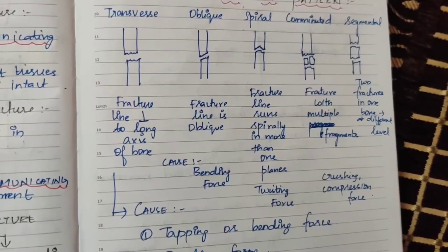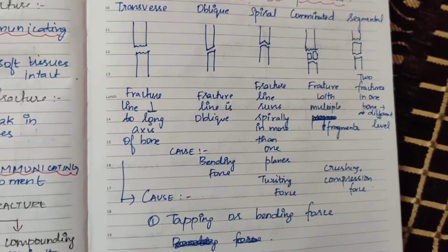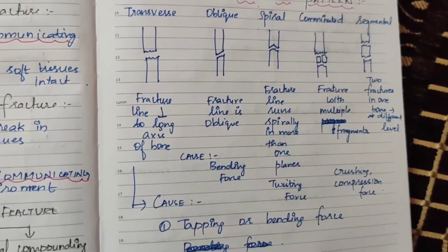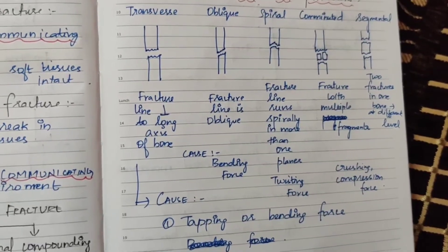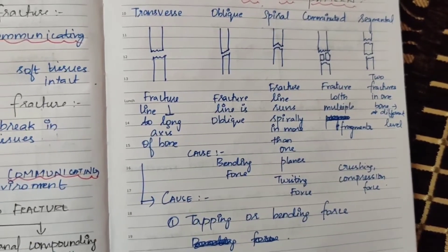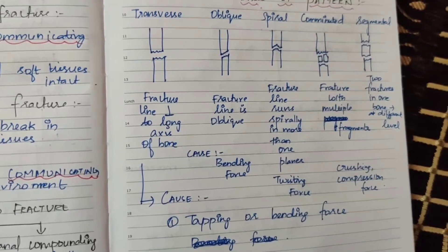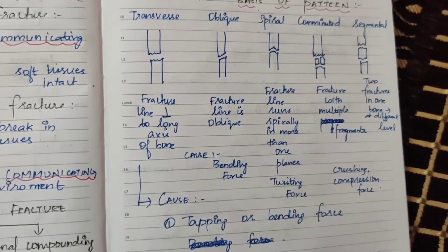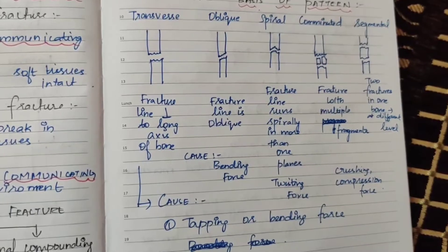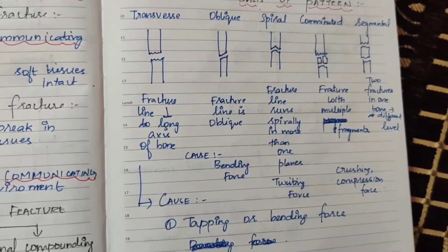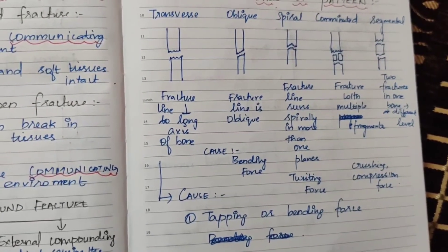Regarding causes by pattern: transverse fracture is caused by a tapping or bending force; oblique fracture is mainly caused by a bending force; spiral fracture is caused by a twisting force; and comminuted fracture is caused by a crushing and compression force.